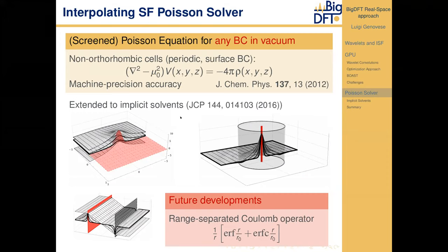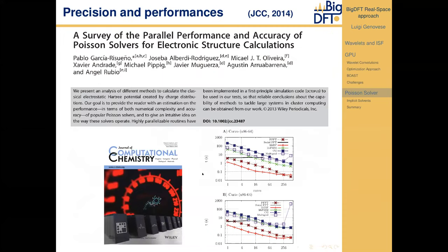I would like to briefly discuss another real space operation in the BigDFT code: the Poisson solver. The interpolating scaling function basis set is optimal for electrostatic problems and can develop a direct approach to solve the Poisson equation with various boundary conditions — free boundary condition fully isolated, as well as surface boundary conditions, wire-like boundary conditions, and fully periodic boundary conditions. This solver has been benchmarked and has shown excellent features of precision and parallel performance, in line with the HPC mindset.